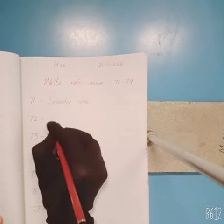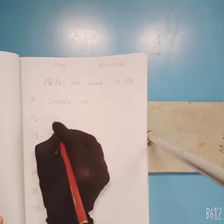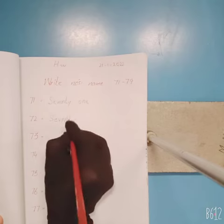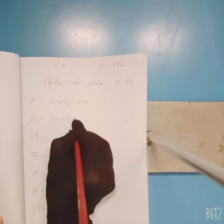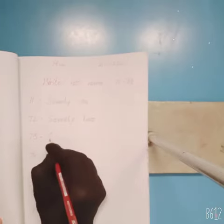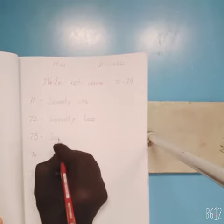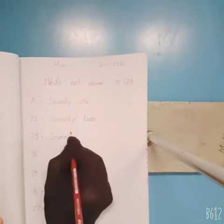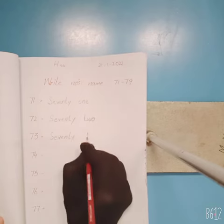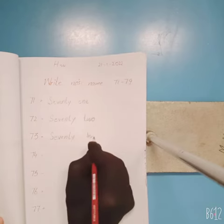72: S-E-V-E-N-T-Y, seventy, T-W-O, two — seventy-two, 72. Next, 73: S-E-V-E-N-T-Y, seventy, T-H-R-E-E, three — seventy-three, 73.